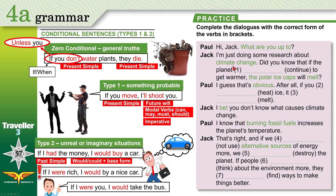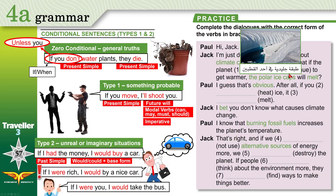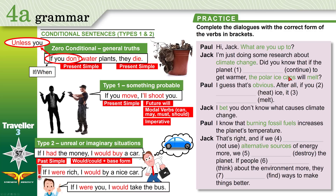'Did you know that if the planet continues to get warmer, the polar ice caps will melt?' The polar ice caps are thick layers of ice at the north pole or south pole. 'Melt' means to transform from solid to liquid, from ice to water. So: if the planet continues to get warmer, the polar ice caps will melt. Which situation is this — zero conditional, type 1, or type 2?